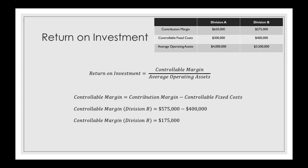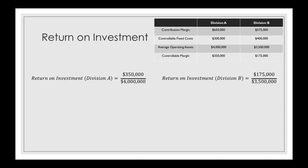Now that we have the controllable margin for each of our two divisions, we can start plugging things into the return on investment equation. For Division A, we take the controllable margin of $350,000 divided by the average operating assets of $4,000,000. For Division B, we take the controllable margin that we found similarly.